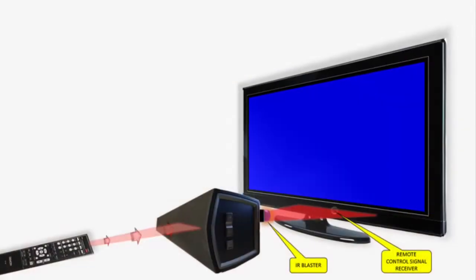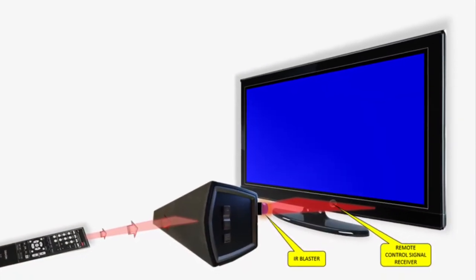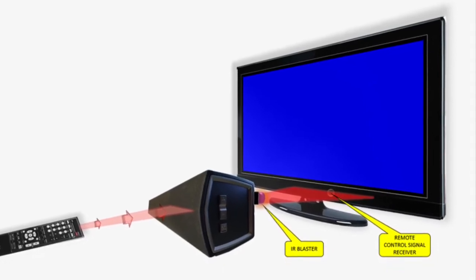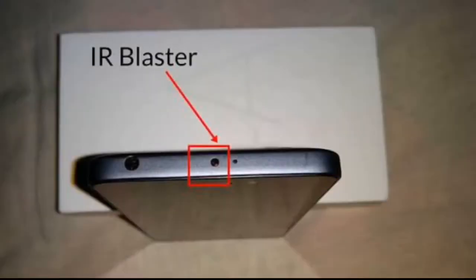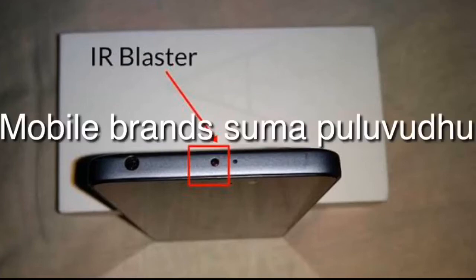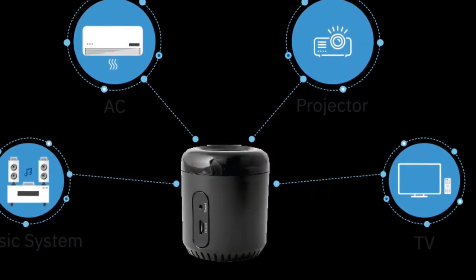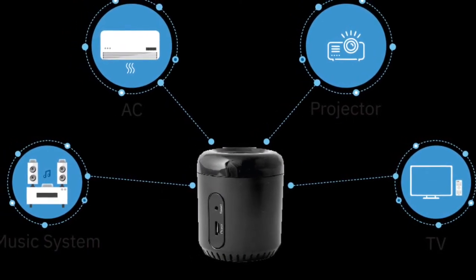If you click on the IR Blaster, you can see the mobile phone. You can see the battery. If you click on the battery button, this is the easy button to remove the battery and carry the IR Blaster.